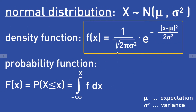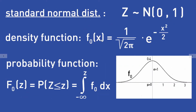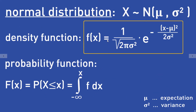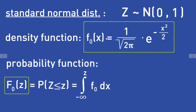Here you have the general density function for a random variable x with the general normal distribution — it looks a bit more complicated. The nice thing is that instead of using this general density function with mu and sigma, you can always use the easier density function of a standard normally distributed random variable. So instead of using the general form, you can use the standard normal form, which looks simpler.